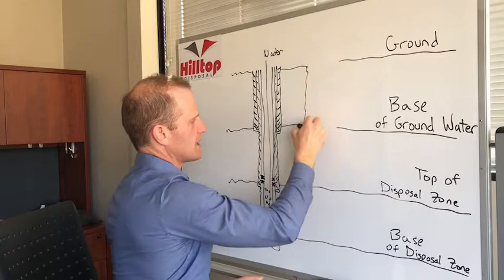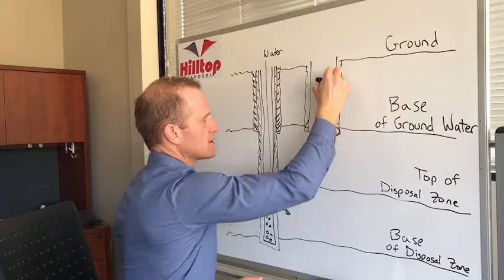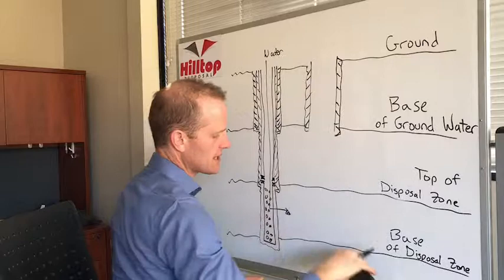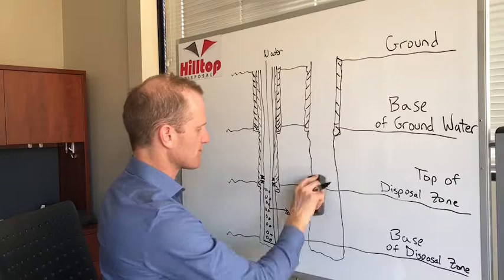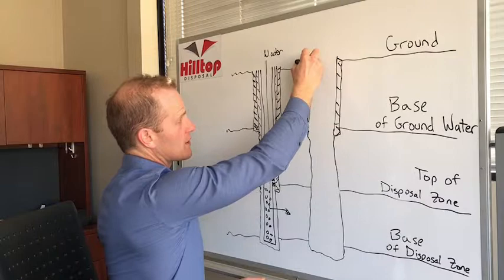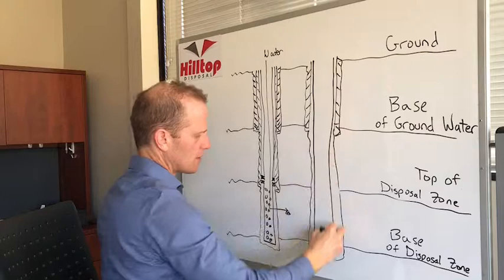In this case, same thing. Drill the hole, run your surface casing, cement it into place. Drill out, except this time you're going to drill all the way to TD, all the way down below your disposal zone. And this time you're going to run your casing all the way through your disposal zone from surface all the way down. And then you're going to cement everything into place.